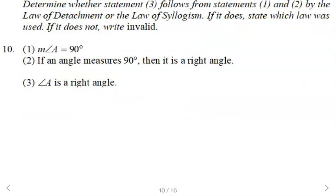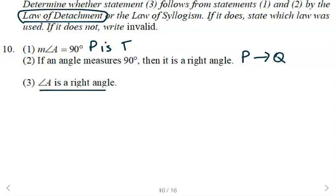All right, here we've got to determine if the third statement follows the first two by either the law of detachment or the law of syllogism. So we'll state which law if it does. If not, then we'll write invalid. All right, so I'm noticing that the first one is just a statement. The second one is a conditional, if P then Q. So we have a conditional. If an angle measures 90 degrees, then it is a right angle. And then we have that the hypothesis is true up here. So we're putting those first two statements together using the law of detachment. Then we can say angle A is a right angle. If we have the hypothesis, P is true, and we have if P then Q, then the conclusion Q is true. So valid by the law of detachment.